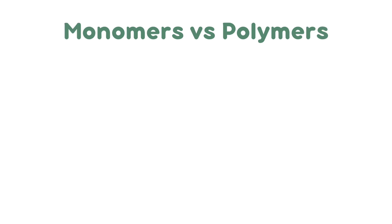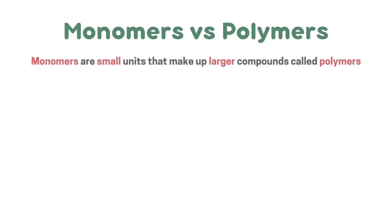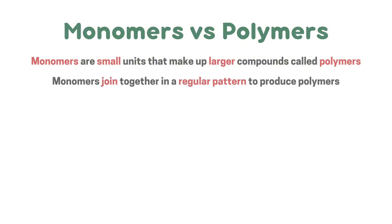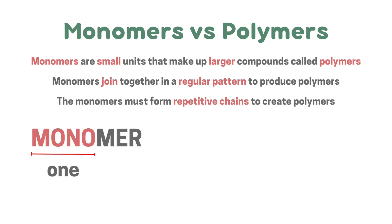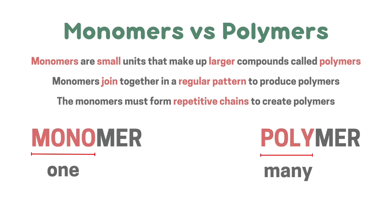Monomers are small units that make up larger compounds called polymers. Monomers join together in a regular pattern to produce polymers, forming repetitive chains. The word 'mono' means one, and 'poly' means many — monomers are the smallest units polymers can be made out of, and many monomers are needed to create a polymer.